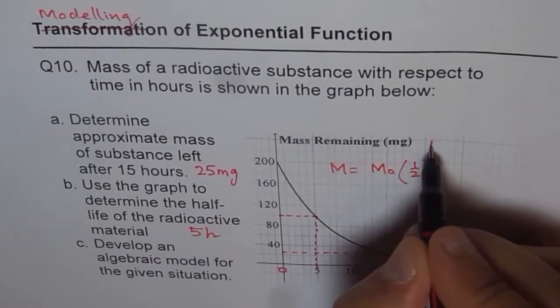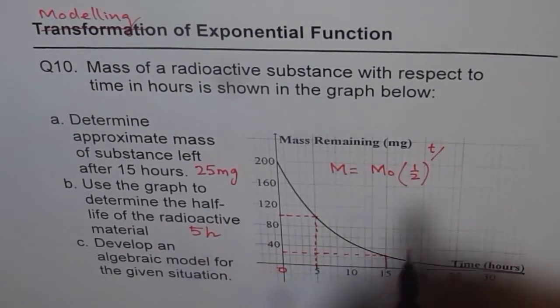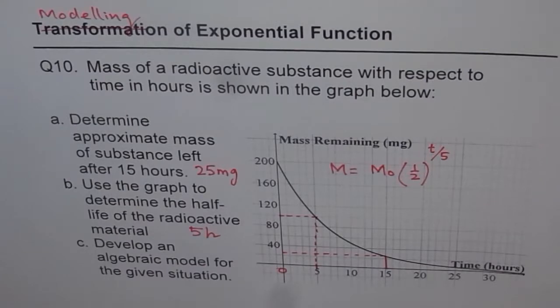So we can say half of t divided by half-life period, which is 5 hours. So that should give us the model. I think that is just the right answer, which we are looking for.